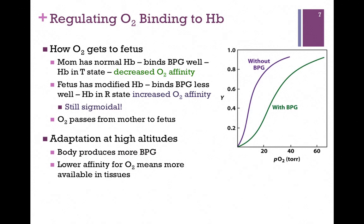Bisphosphoglycerate also relates to adaptation of oxygen binding at high altitudes. At high altitudes, the body produces more BPG, and remember that means a lower affinity for oxygen. That might seem contrary at high altitudes where there's less oxygen available, but the partial pressure in the lungs is still high, so there's no trouble picking it up there. When it gets to the tissues, it more readily releases the oxygen — and that's where your body really needs it. So in these two ways, both by the Bohr effect and by the presence or absence of bisphosphoglycerate, we can modulate the oxygen binding affinity of hemoglobin.